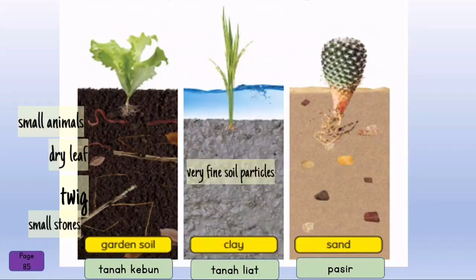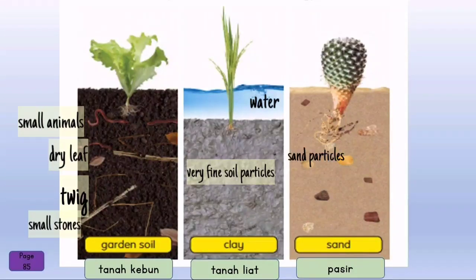Clay — Tanah liat. Clay consists of very fine soil particles and water. Terdiri daripada butir pasir yang sangat halus dan air. Sand — Pasir. Sand contains sand particles and small stones. Pasir pula mengandungi tanah pasir dan batu-batu kecil.